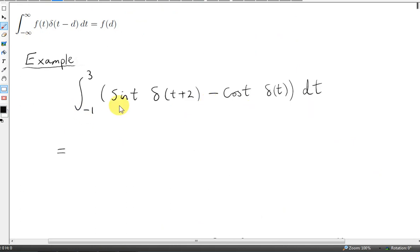Let's just take this example. Now we don't have to integrate from minus infinity to plus infinity here, because the delta function appears in the interval from minus 1 to 3. The delta function here occurs at t equals minus 2. Actually, this means that this first integral here is 0.